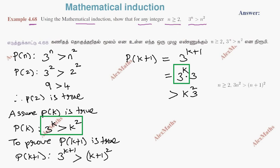Now, from a previous result we solved, 3n squared is greater than n plus 1 whole squared. Substituting k for n, we have 3k squared is greater than k plus 1 whole squared. Therefore, we can use this result here.